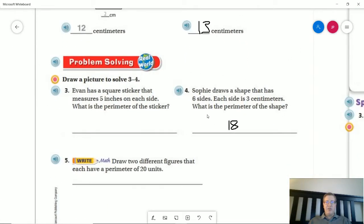Number four, we could do this one without a ruler. So if we make a shape that has six sides, we might get something that looks a little bit like this, and then we have three on each edge, and that would give us a perimeter of 18.